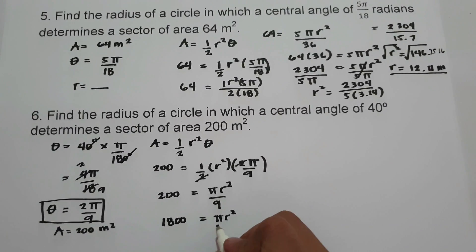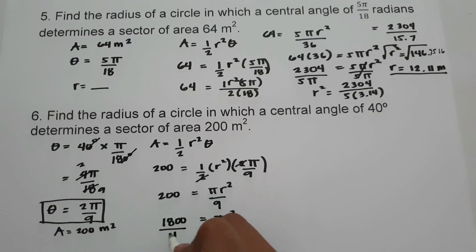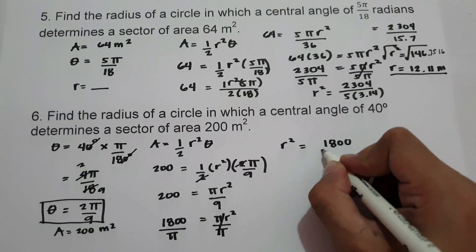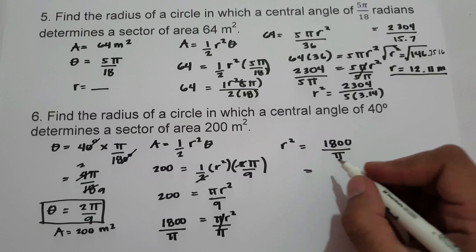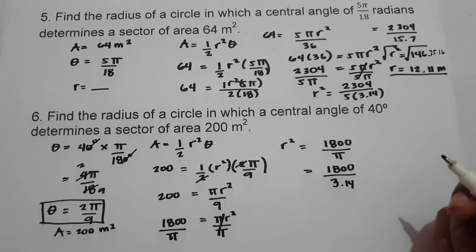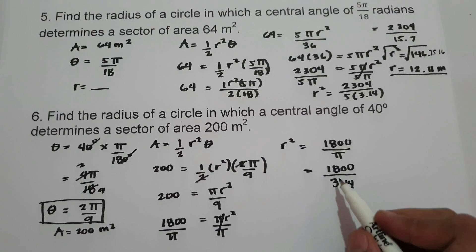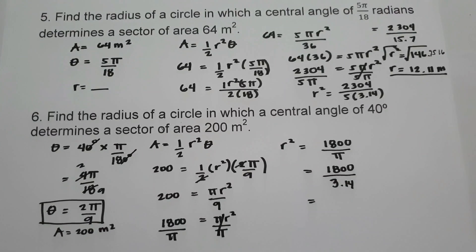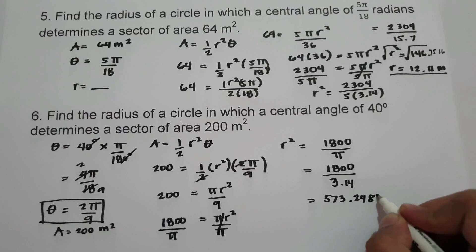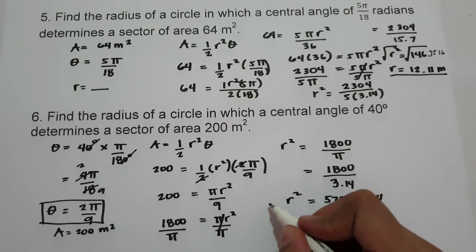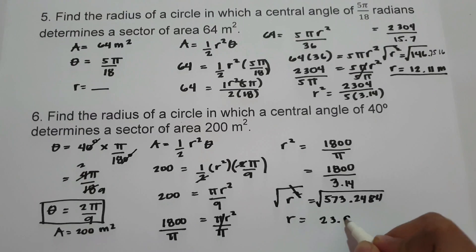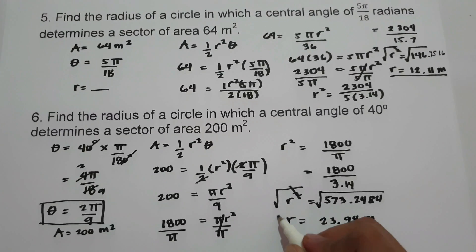Dividing both sides by pi, we get r squared equals 1,800 divided by pi. Substituting pi as 3.14, we have 1,800 divided by 3.14, which is approximately 573.25. Taking the square root of both sides, the radius is approximately 23.94 meters. This is our radius.